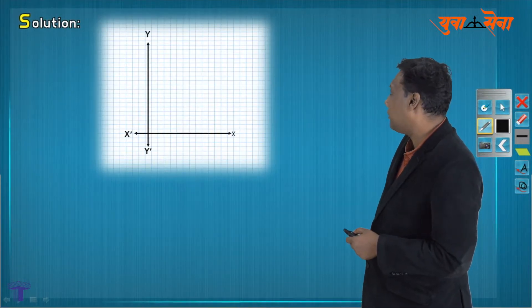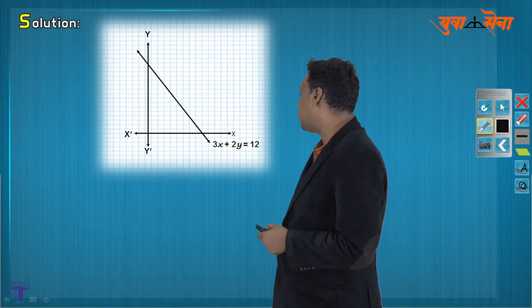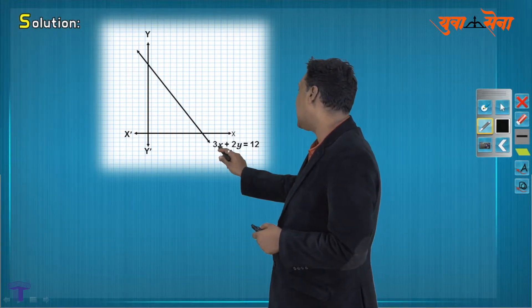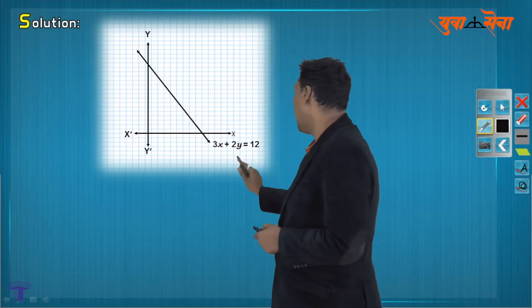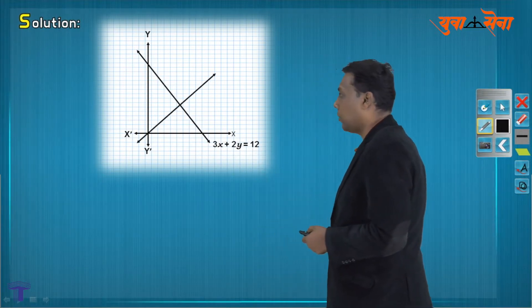We start plotting the diagram one by one, x then y to begin with. We have the first line 3x plus 2y equal to 12. How do I plot? When x is 0, y should be 6. When y is 0, x is nothing but 4, as 3 and 12 cancel off. First line we plot.